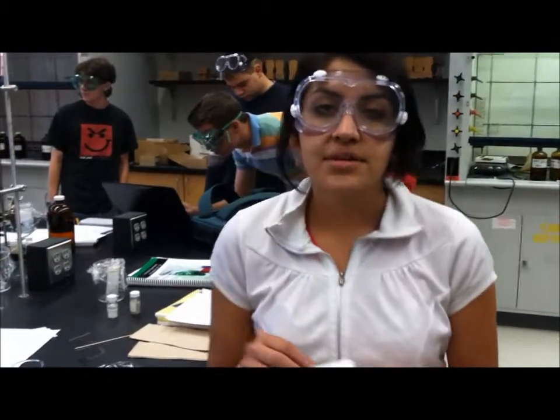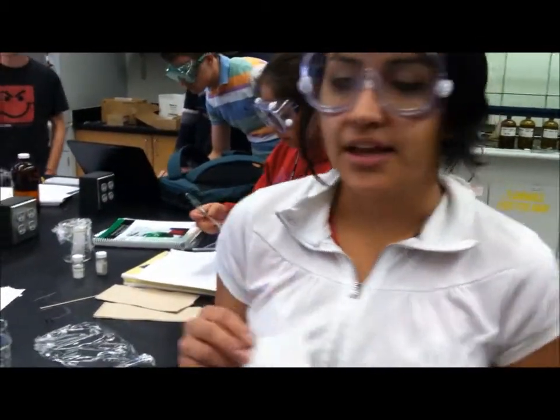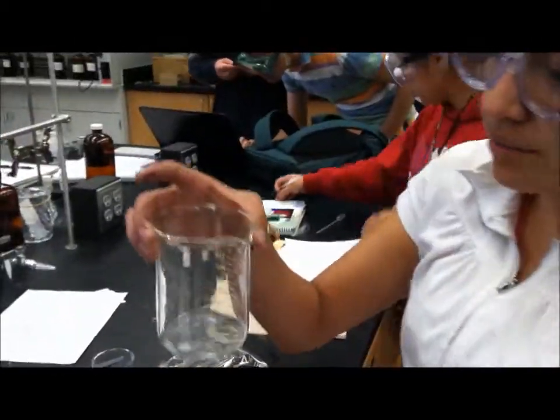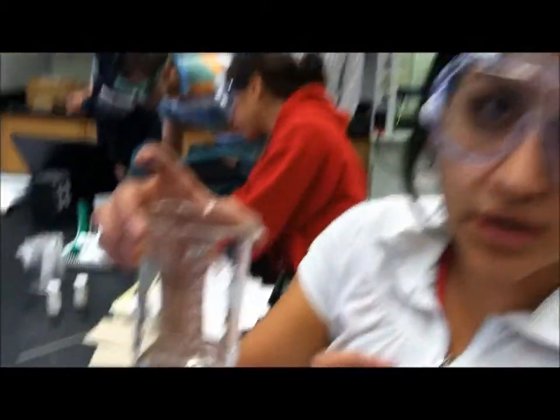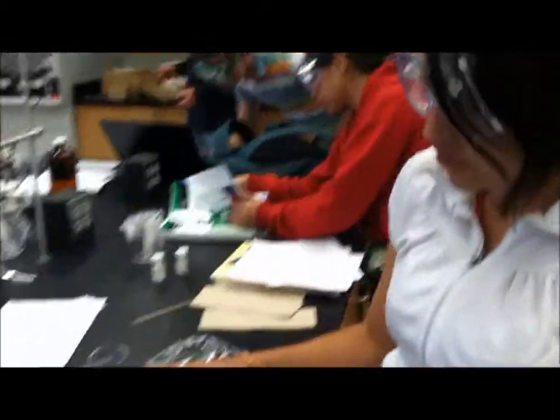All right, after completing the spotting on your paper plate, you want to grab a beaker and place a small amount of water-acetone inside the beaker. Make sure the water-acetone is less than the centimeter line on the paper plate.